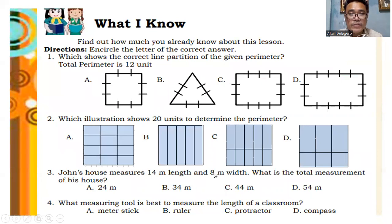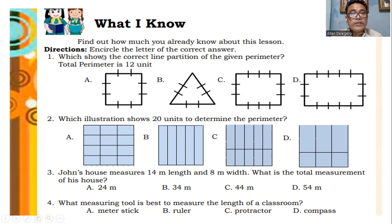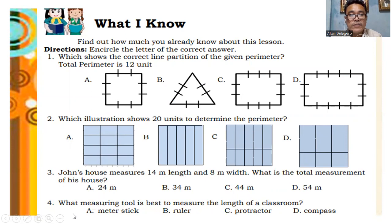Before we proceed with this module, take this pretest first to find how much you already know about the lesson. This is a 10-item pretest. Encircle the letter of the correct answer. Number 1: which shows the correct line partition of the given perimeter — the total perimeter is 12 units. Number 2: which illustration shows 20 units to determine the perimeter. Number 3: John's house measures 14 meters length and 8 meters width — what is the total measurement? Number 4: what measuring tool is best to measure the length of a classroom?